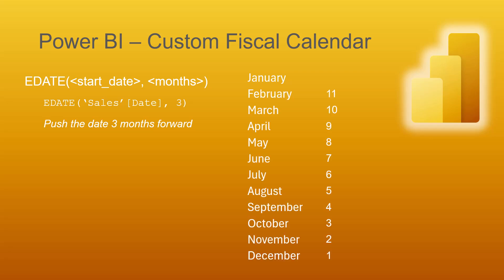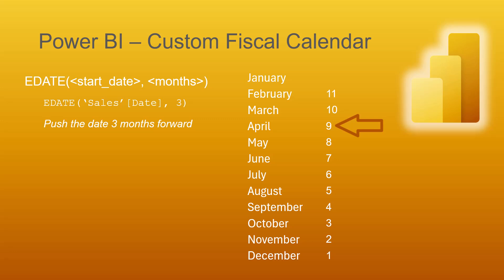So January 1st would become April 1st, but October 1st would become January 1st. Here's a cheat list of the values you'd use if you wanted a specific month to become the first month in a fiscal calendar. If we wanted October to be our first month, we'd push everything three months into the future. Likewise, if you wanted April to be your first month, you'd push everything nine months into the future.